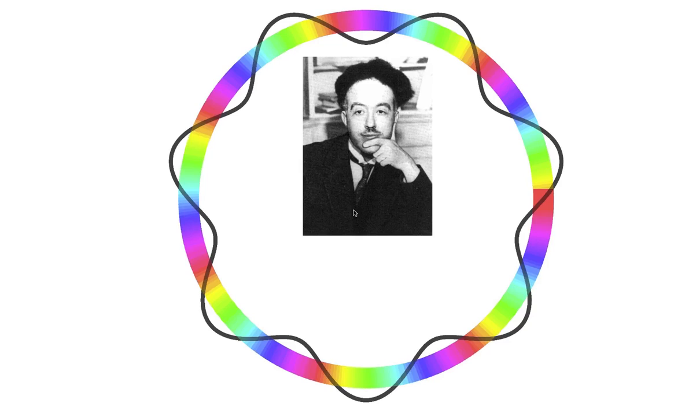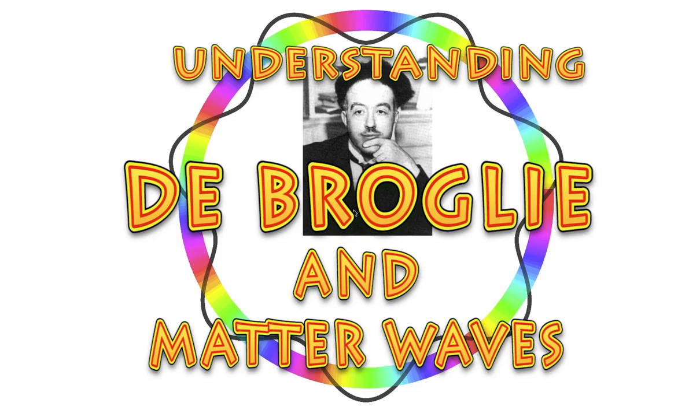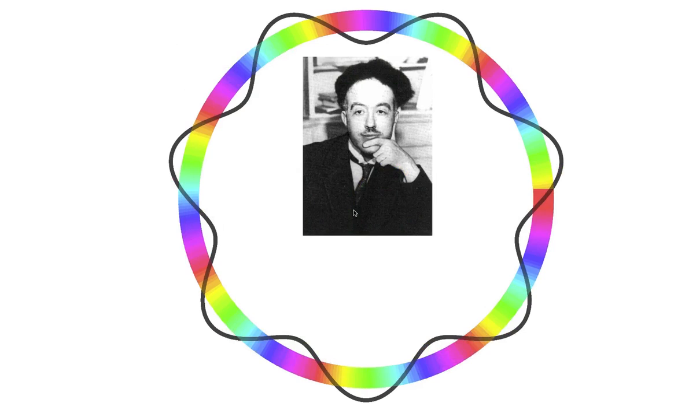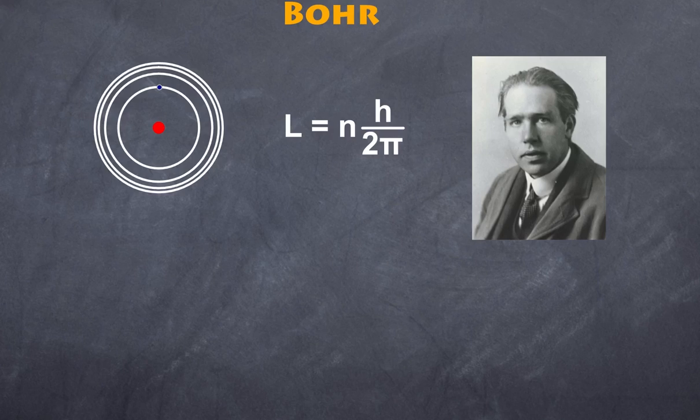Welcome to high school physics explained and today I would like to talk about Louis de Broglie. Louis de Broglie made a very interesting postulate in terms of the nature of matter, in particular electrons.